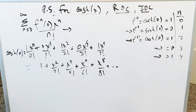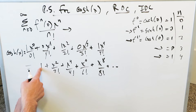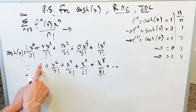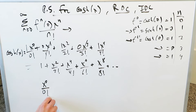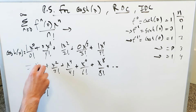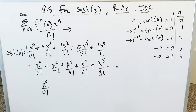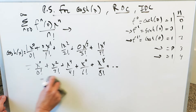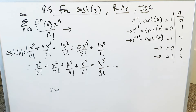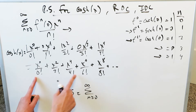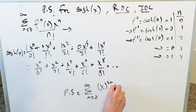Now, what is the power series rule? To make everything consistent, rewrite 1 as x to the 0 over 0 factorial. Since all exponents and factorials here are even numbers, we use 2n. These are not odd numbers so we would not use 2n plus 1. The power series rule is: sum from n equals 0 to infinity of x to the power of 2n divided by (2n) factorial. That is the power series for hyperbolic cosine.